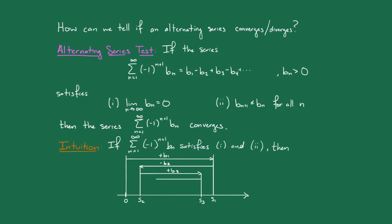We continue this process, zigzagging back and forth, and the fact that the bn's go to 0 means that these zigzags will get really small. We'll eventually approach some value s, which will be the sum of the alternating series.